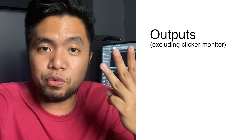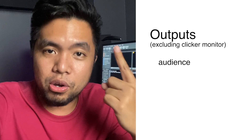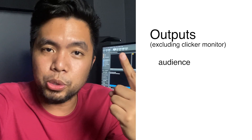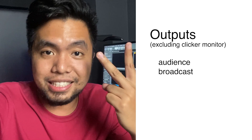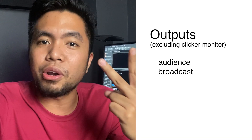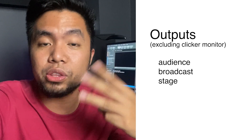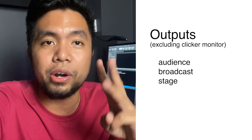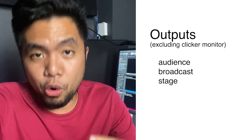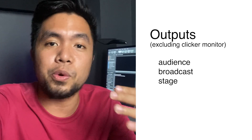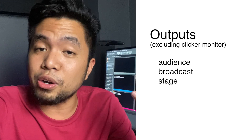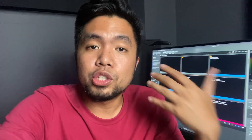Basically, ProPresenter allows us three different outputs. First is the congregation or audience output. Second is for your broadcast output — so the lower thirds and everything we need for broadcast. And third is our stage monitor output for the performers on stage — the pastor, worship leader, and everyone up there. So later on, I'll show you what that looks like. This is the reason why we chose ProPresenter as our presentation software.